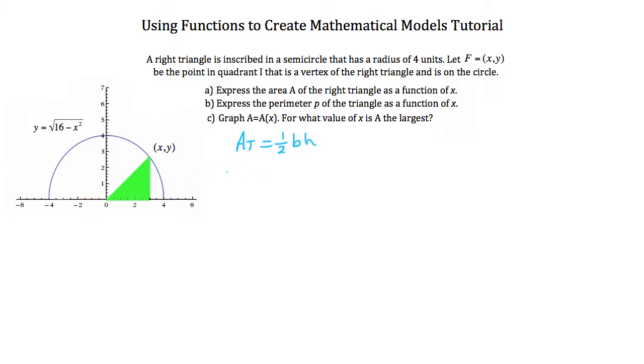So a way that we could write that is A, the area of the right triangle, as a function of x. So our function A(x) is going to be equal to 1/2 of our x times our y. Notice that the y-value here is our y-value from the function that created this circle. That function is y equals the square root of 16 minus x-squared. So let's plug that in for our y-value here in our function. A(x) is equal to 1/2 of x times that y-value, which is the square root of 16 minus x-squared. So this is going to be the function that represents the area of our right triangle.